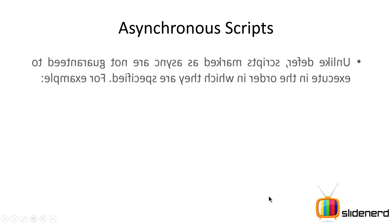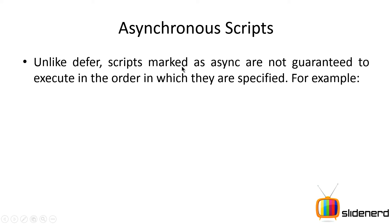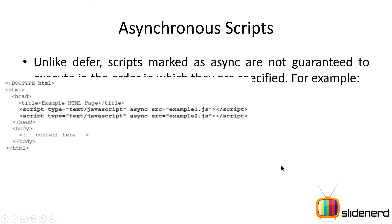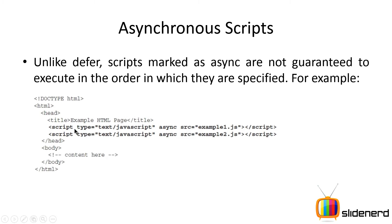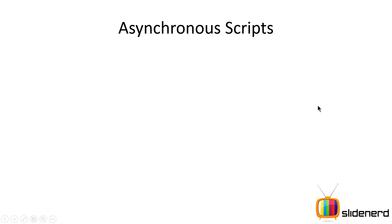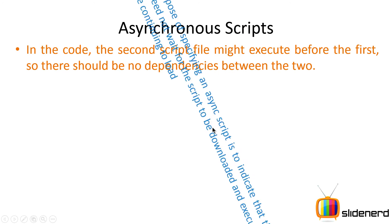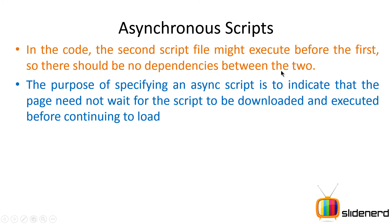Unlike defer, scripts marked as async are not guaranteed to execute in the order they are specified. For example, if there are two script files — example1.js and example2.js — the second script is not guaranteed to run after the first. In fact, the second may run before the first. In such cases you have to be careful, because if your second file contains code that depends on the first, you are ruining your chances of writing good JavaScript. There should be no dependencies between the files if you want to use async on both of them.